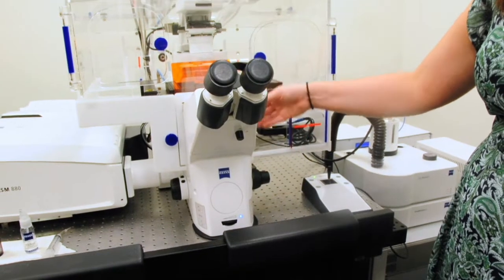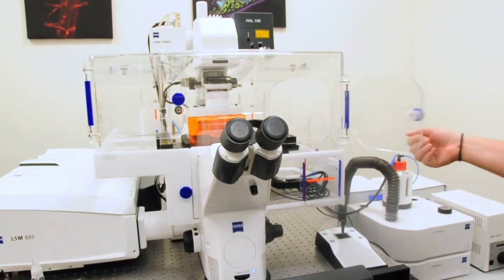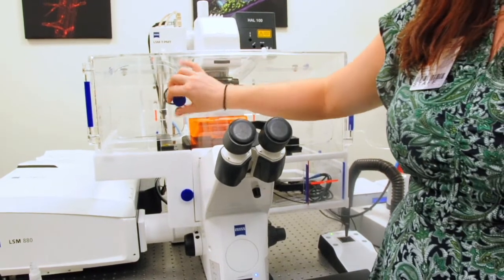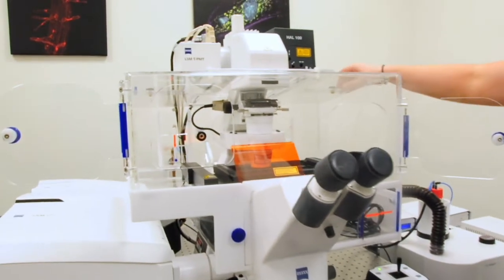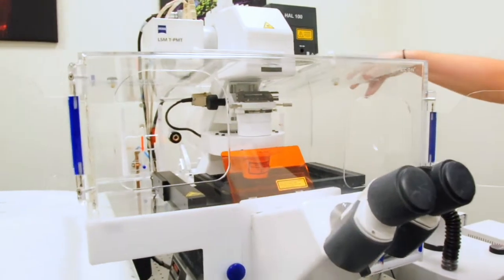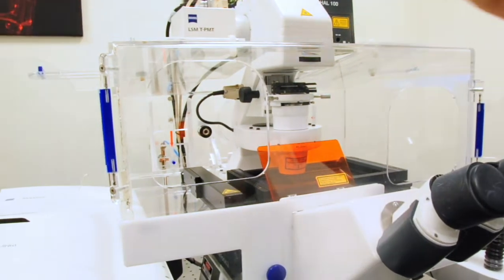And coming up, you can see that we have a box around the microscope. This is specifically to maintain an environment if we're doing live cell imaging. Otherwise, it's not necessary to have it. I'm opening up all the pieces so that we can actually get to the microscope.